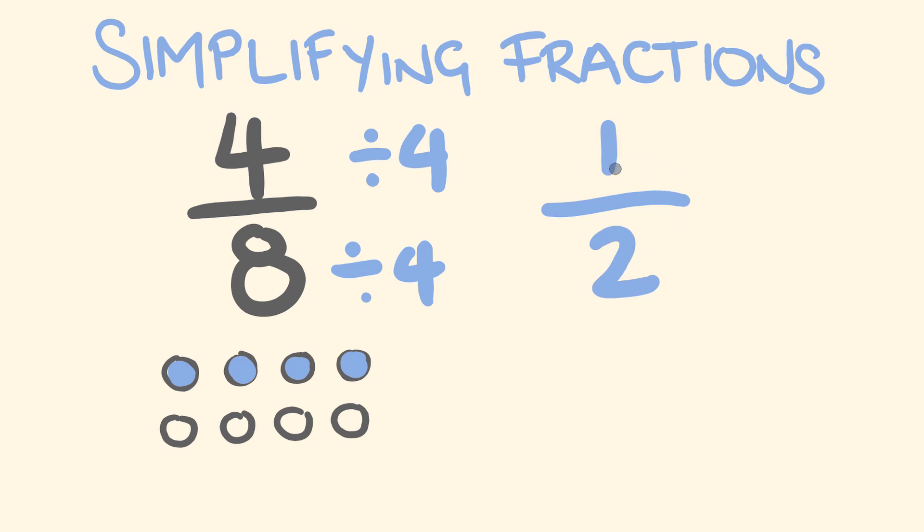Now, can we take this any further? Well, because we've got a 1 here, we can see straight away that we can't, but there is no common factor that we could divide into both 1 and 2 that would reduce it any further. So, no, we can't. So what about another example?